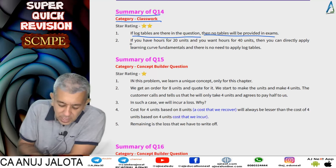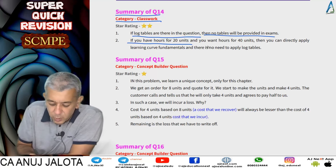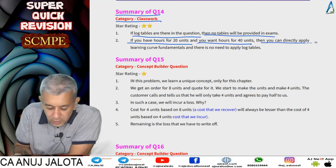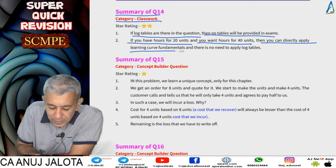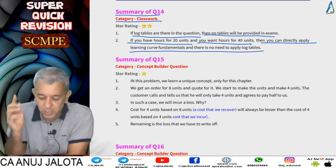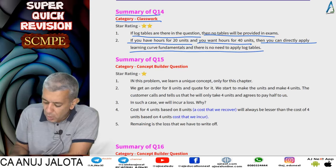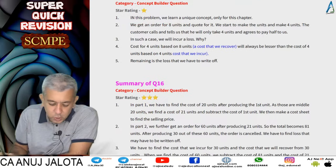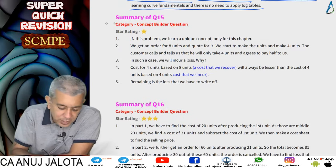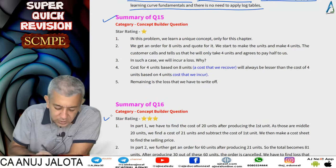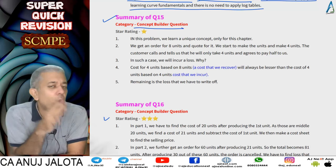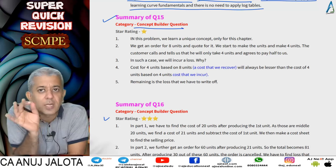If you need total hours for 40 units but you already have the answer for 20 units, since 40 is double of 20 you can directly apply learning curve fundamentals — no need for log tables when the number of units doubles. If log tables are provided in the question, no tables will be given in exams. This was the concept from question number 14. Question number 15 was a concept builder question, a one-star question, and was the base for question number 16.